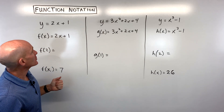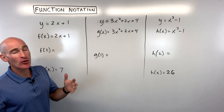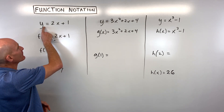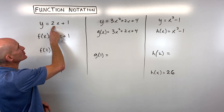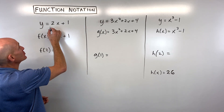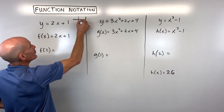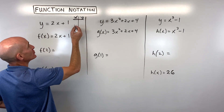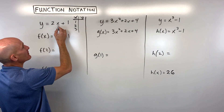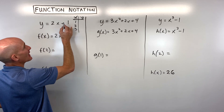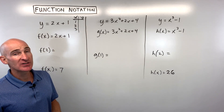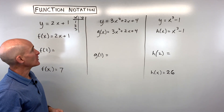When we talk about function notation, let's go back a little bit and just talk about equations for a minute. Say you had an equation like y is equal to 2x plus 1. If we wanted to graph y equals 2x plus 1, you would make an xy table, pick some values for x, put them in, simplify, and get your outputs — your y values. That's one way we learned initially.